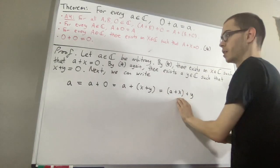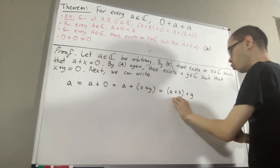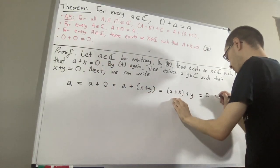But we know that a plus x is also equal to 0. So we'll replace that with 0. So we get 0 plus y.